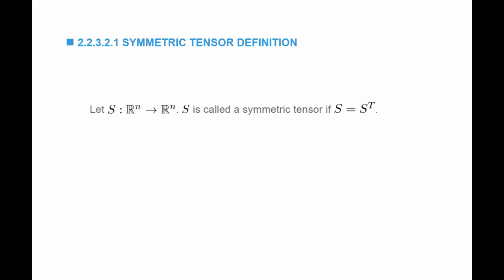By definition, S is called a symmetric tensor if it is equal to its transpose. In component form, that means S_ij is equal to S_ji. For example, in a matrix with components S_{1,2,3}, S_{1,2} has to be equal to S_{2,1}, so that entry has to be 2.